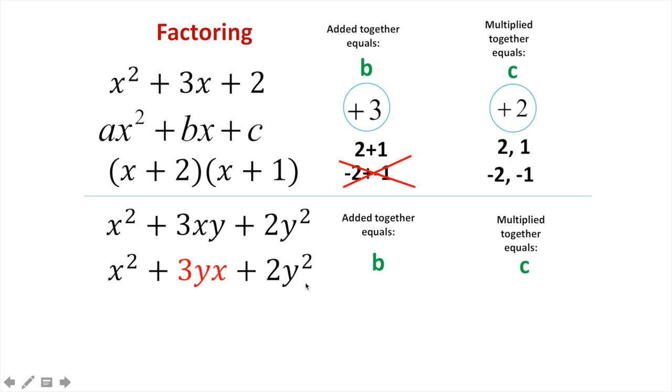So I need two things that multiply together to give me c, but add together to give me b. Well, c in this case is 2y². What multiplies together to give me 2y², but adds together to give me 3y. Now, 3y is my coefficient here. So that's the only real wrinkle that we have here, is that now it should be a 3y instead of just plain old 3.